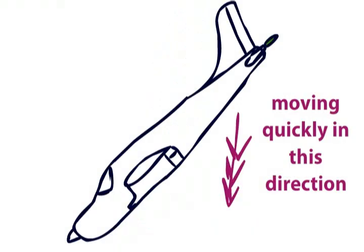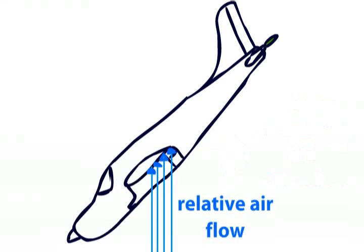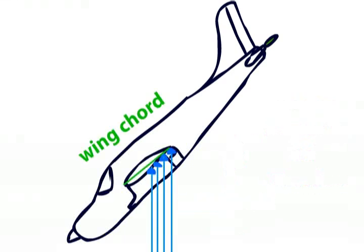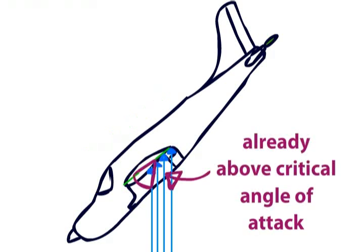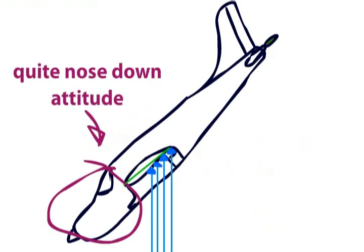If your flight path is in this direction, the relative airflow is in this direction. If we put in the wing chord, you can see that we are stalled, even though the nose is pointing way, way, way down towards the ground and you are probably already weeping as you stare at your impending doom.